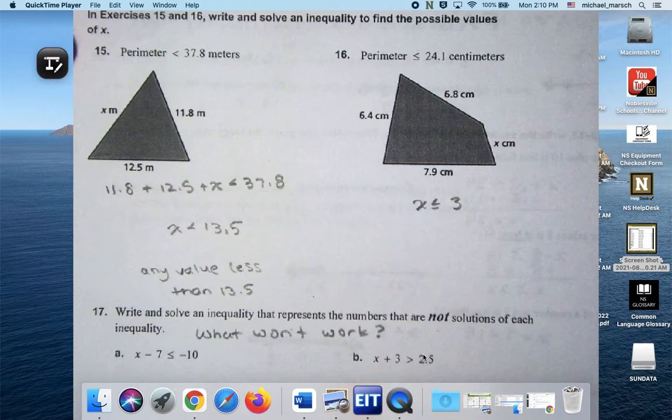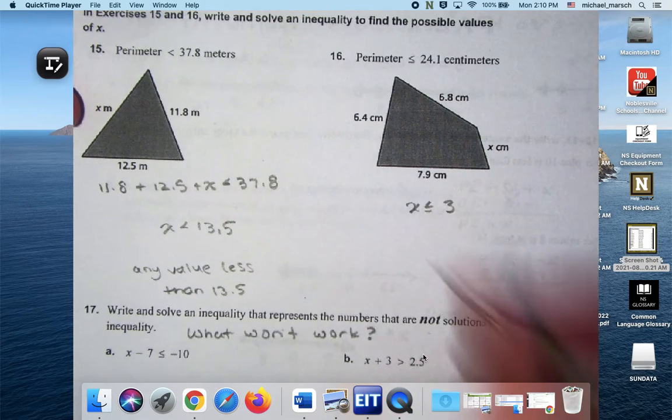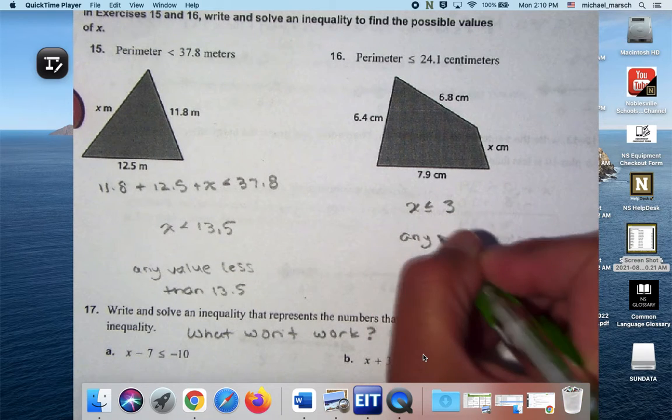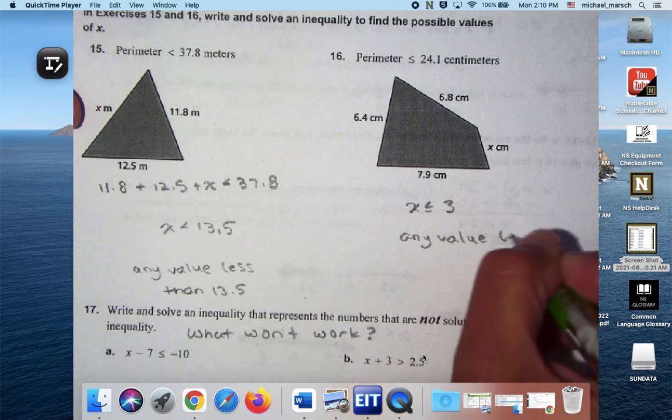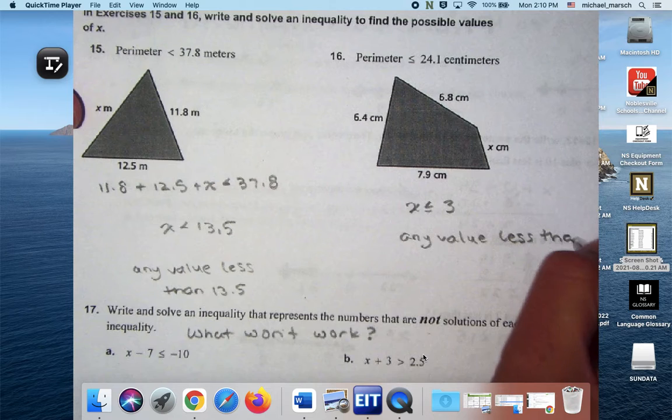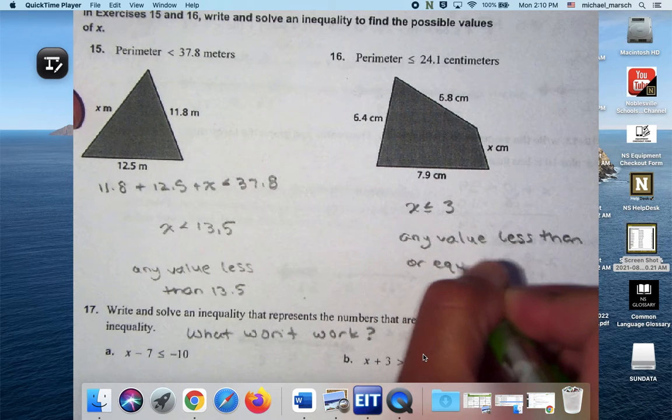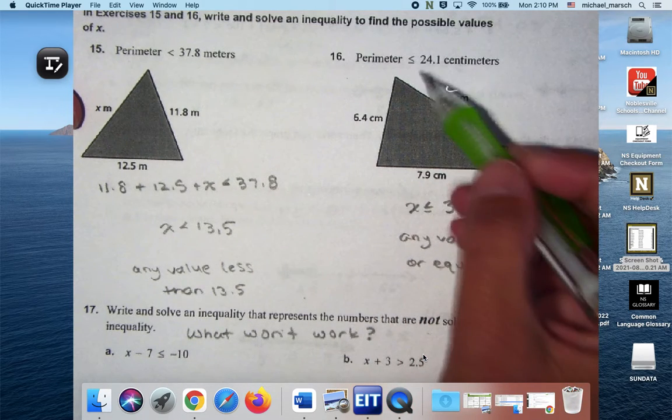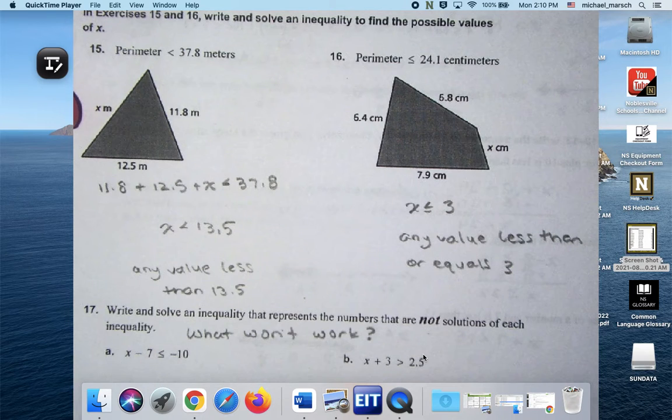And then for number 16, I think I get X is less than or equal to 3. Is that right? Yeah. Seems pretty easy there. That's weird. So any value less than or equal to 3 would give us that exact perimeter or something less than that. Yes?